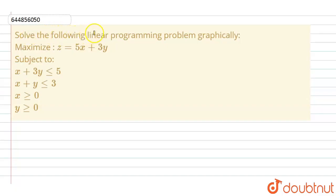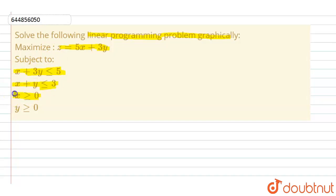The question is: solve the following linear programming problem graphically. Maximize z equals 5x plus 3y, subject to x plus 3y less than or equal to 5, x plus y less than or equal to 3, x greater than or equal to 0, y greater than or equal to 0. In this question, we have to solve the following linear programming problem graphically.